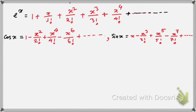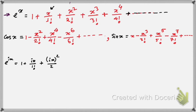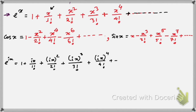From the first result, we can find e to the power ix. Just replace x by ix, then we get: 1 plus ix by factorial 1 plus (ix) squared by factorial 2 plus (ix) cubed by factorial 3 plus (ix) to the power 4 by factorial 4, and so on.